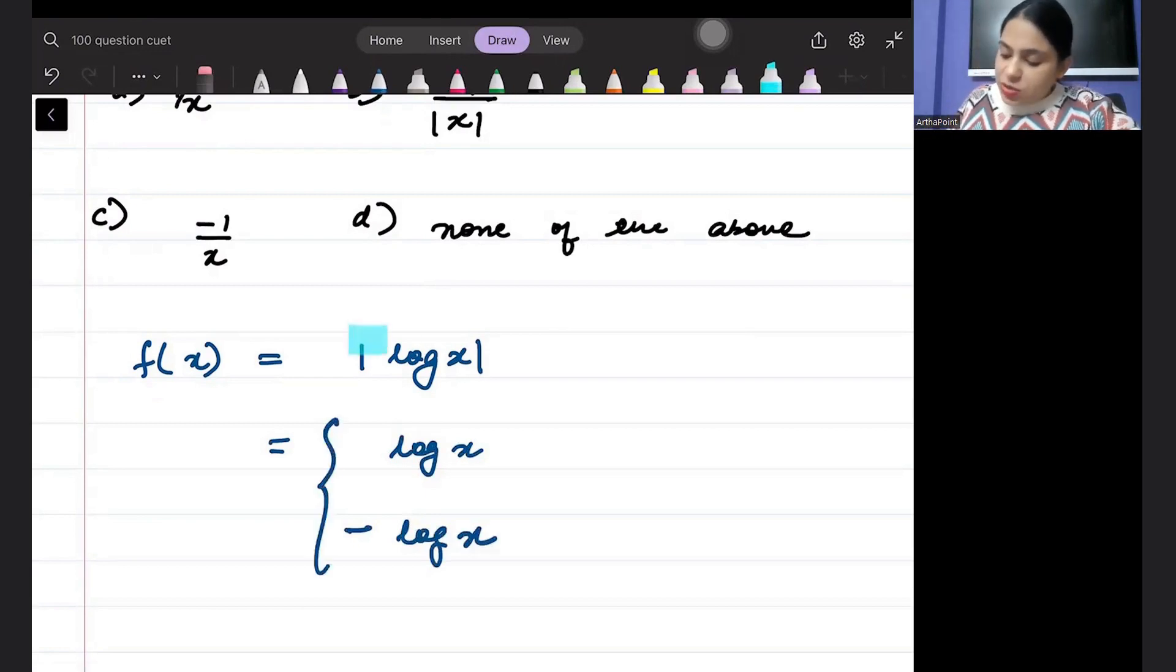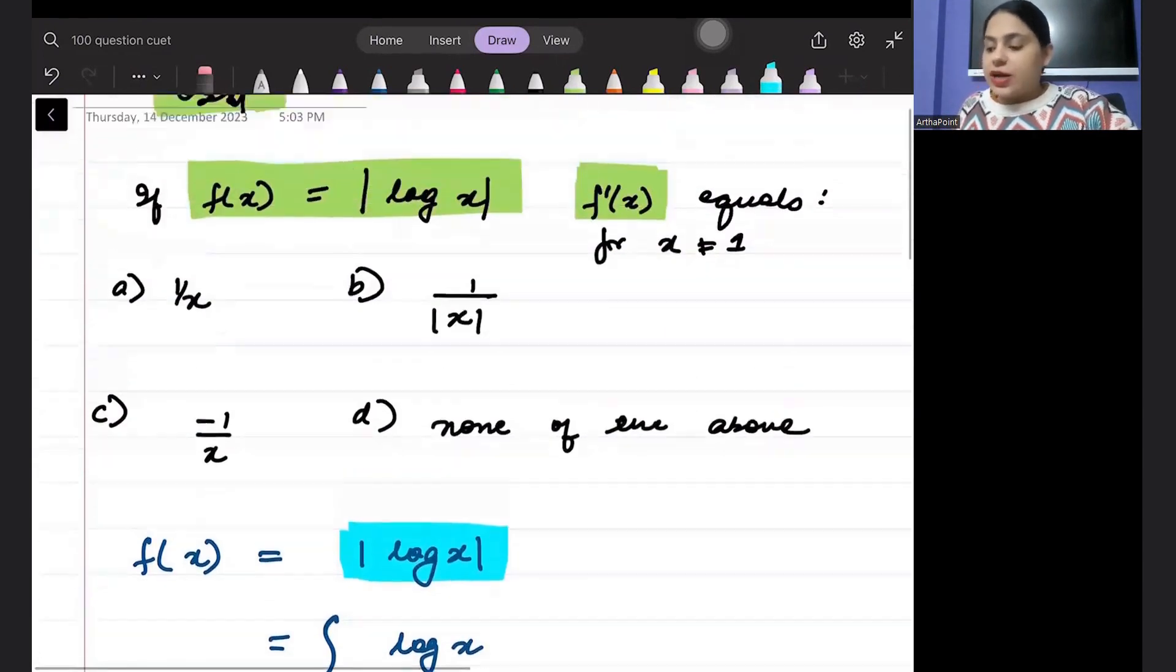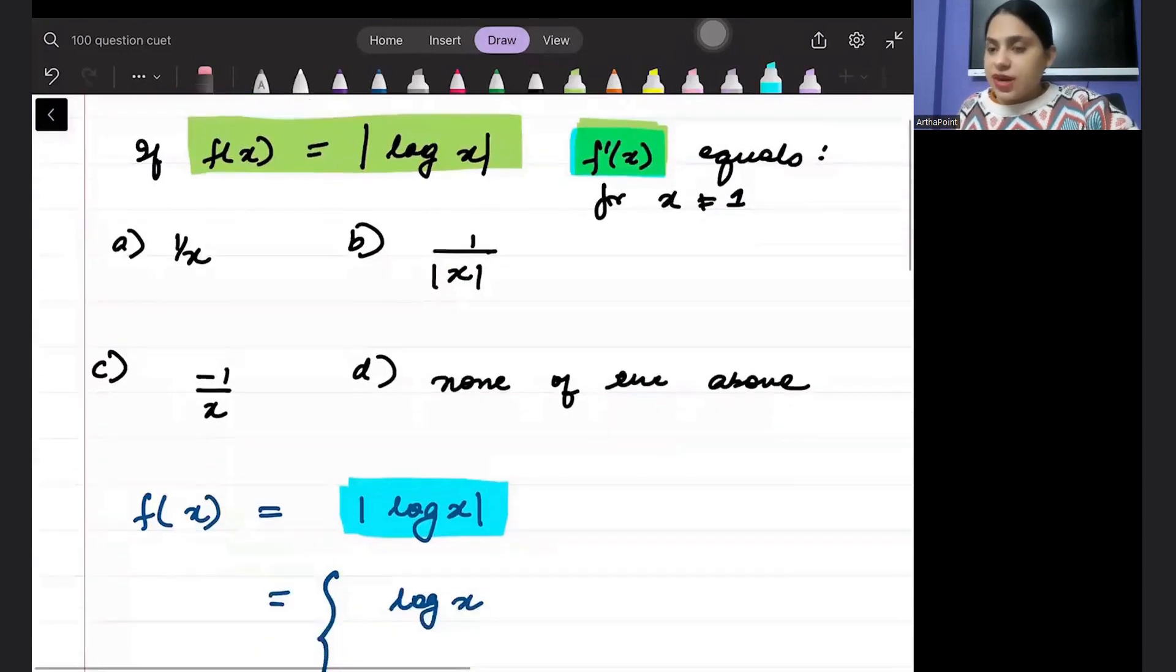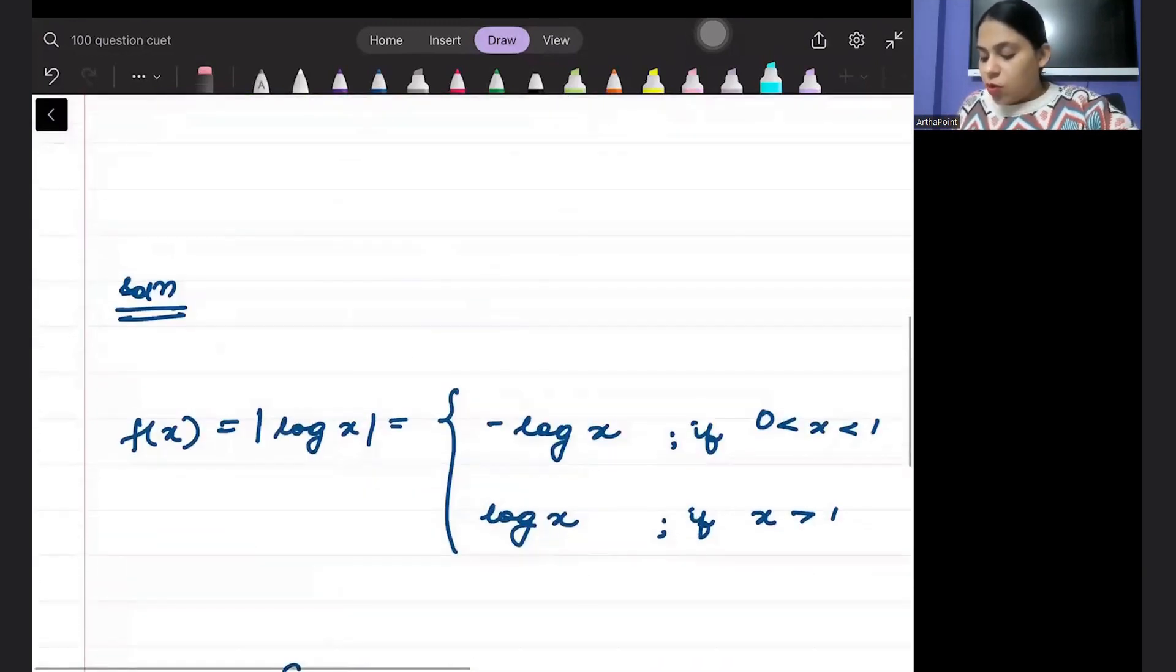We need to open this absolute directly. We can't go ahead and find the differentiation directly. The first step that we should be doing is opening up this mod.